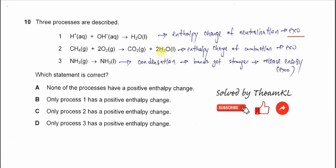So enthalpy change of combustion is always exothermic. For the last process, ammonia gas forms ammonia liquid. This one is condensation. Condensation involves bond formation. The bonds get stronger, so therefore